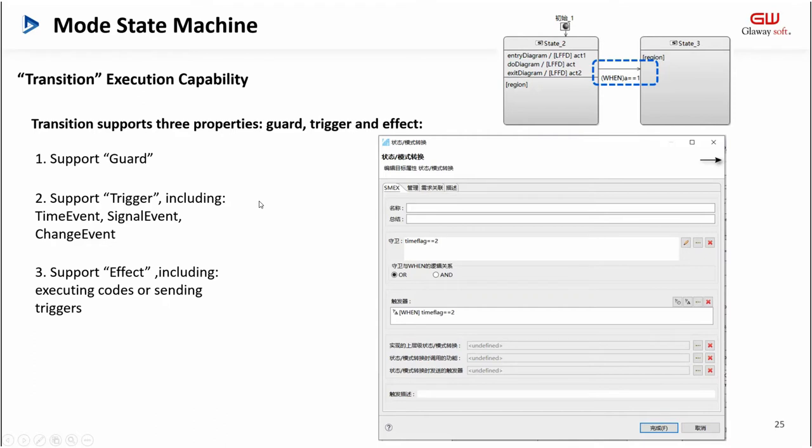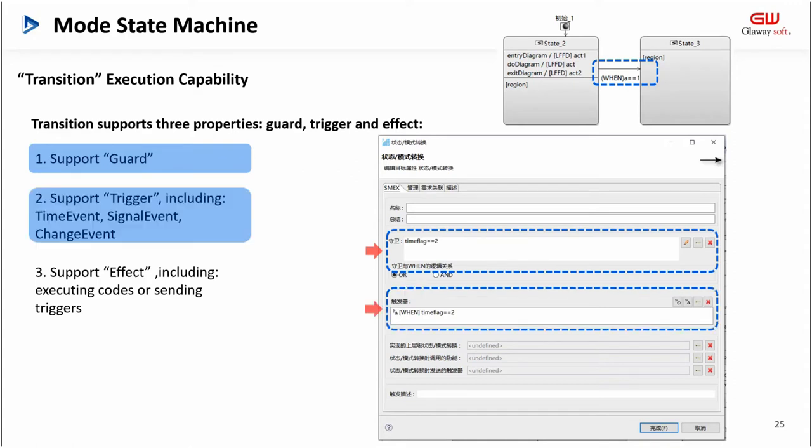After talking about the rules of states, I want to talk about the rules of the transition line. Transition supports three properties: it supports guard, it supports trigger including time event, signal event, and change event, and it supports effect, including executing calls or sending triggers.